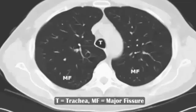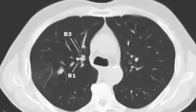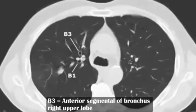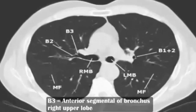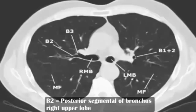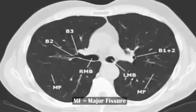Trachea. MF: major fissure. B: bronchus. B1: apical segment of bronchus, right upper lobe. B2: anterior basal segment. B3: anterior segment of bronchus, right upper lobe. B2: posterior segment of bronchus, right upper lobe. RMB: right middle bronchus. MF: major fissure.